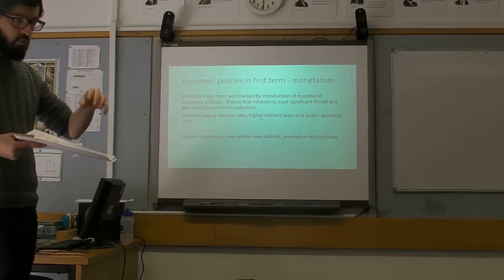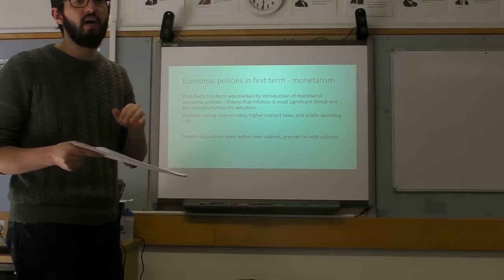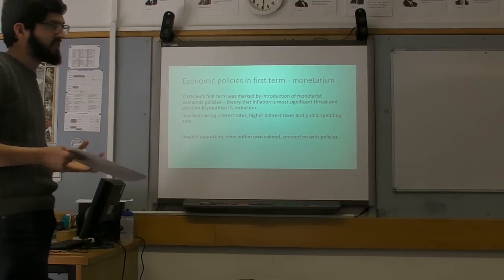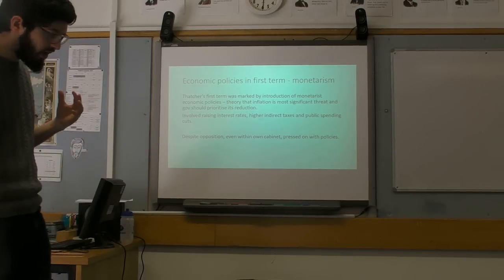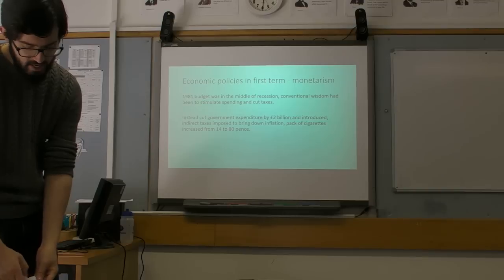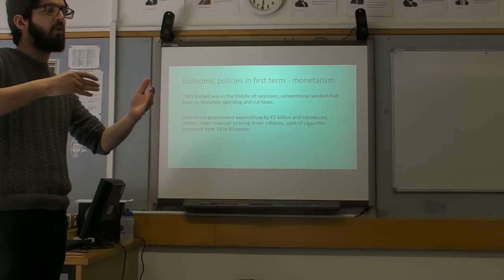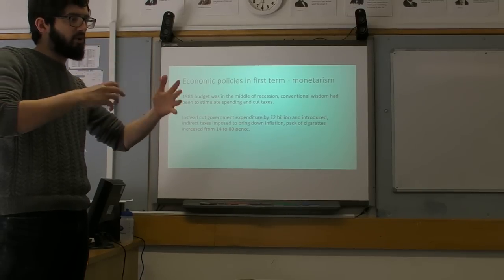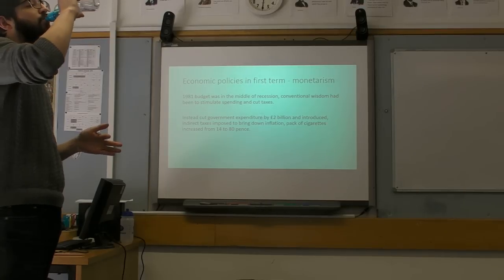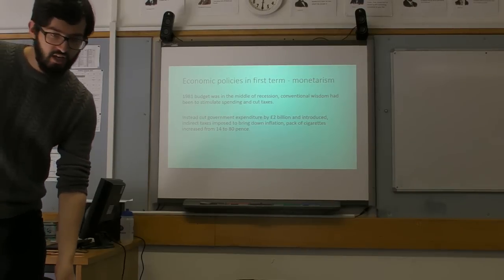Despite opposition within even her own cabinet, there's widespread opposition to her monetarist policies and they try to pressure her to back down. But Thatcher presses on and refuses to abandon monetarism. So the classic example of her monetarist policies is in the 1981 budget. The government makes a budget every single year where they outline what they're going to be spending, what their policy is going to look like.